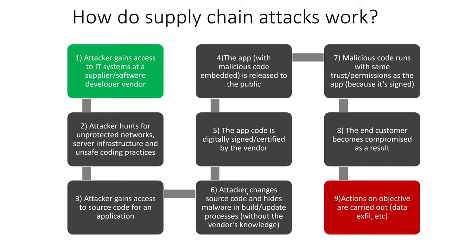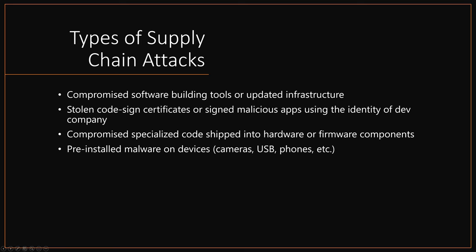The attacker changes that source code and hides malware in the build processes or the update processes — which is what happened with SolarGate — without the vendor's knowledge. That malicious code, because it's signed, can run with the same trust and permissions as the app. The end customer becomes compromised and the attacker can carry out their objectives such as exfiltrating data. Types of supply chain attacks include compromised software, building tools or update infrastructure, stolen code signing certificates, signed malicious apps using a development company's identity, compromised specialized code in hardware or firmware, and pre-installed malware on devices such as cameras, USBs, and smartphones.